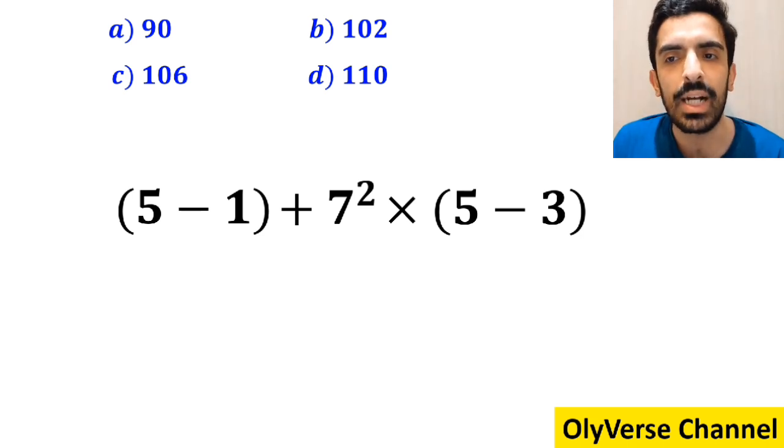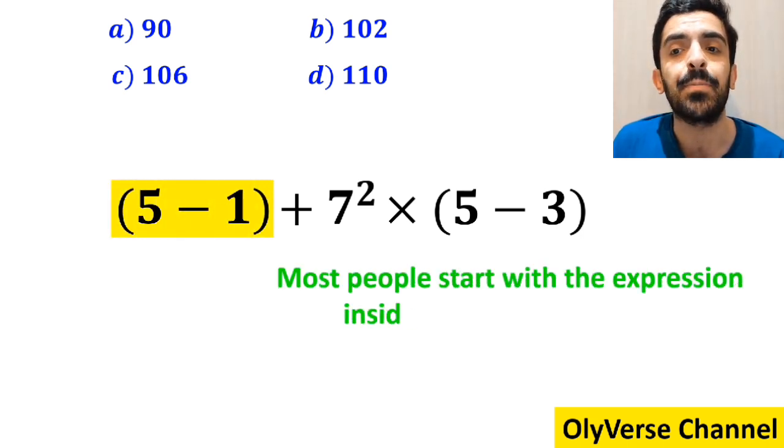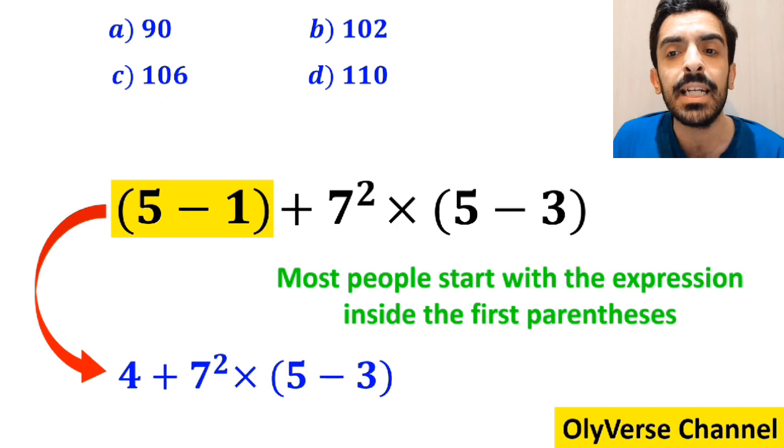In the first step of solving this question, most people start with the expression inside the first parenthesis and simplify this expression to 4 plus 7 squared multiplied by 5 minus 3 inside the parenthesis.